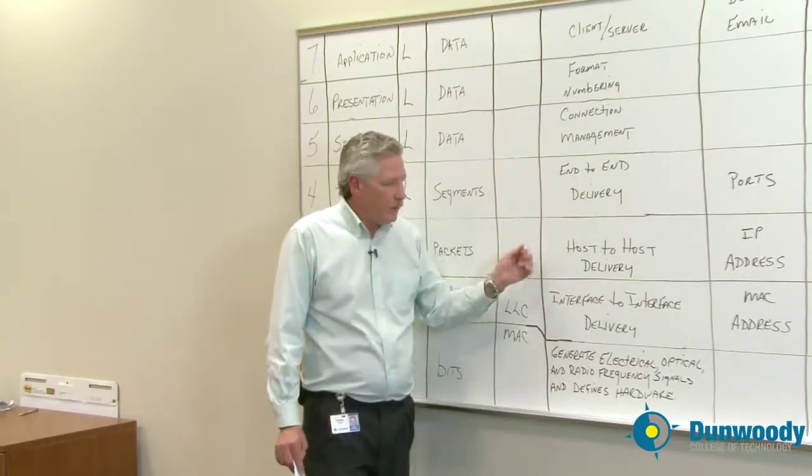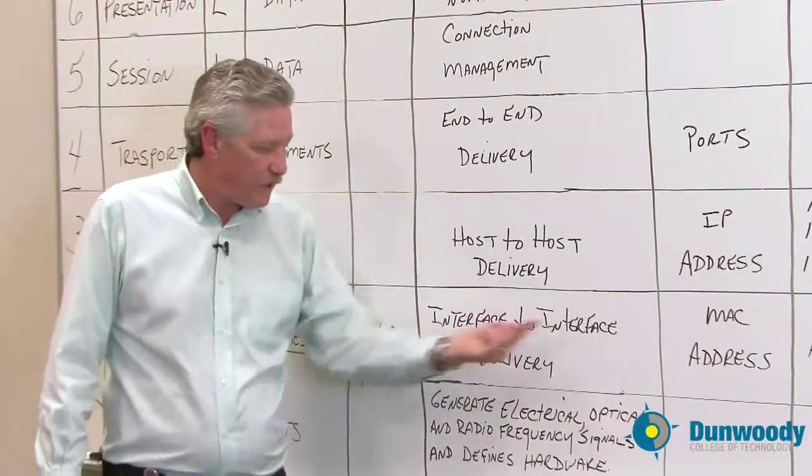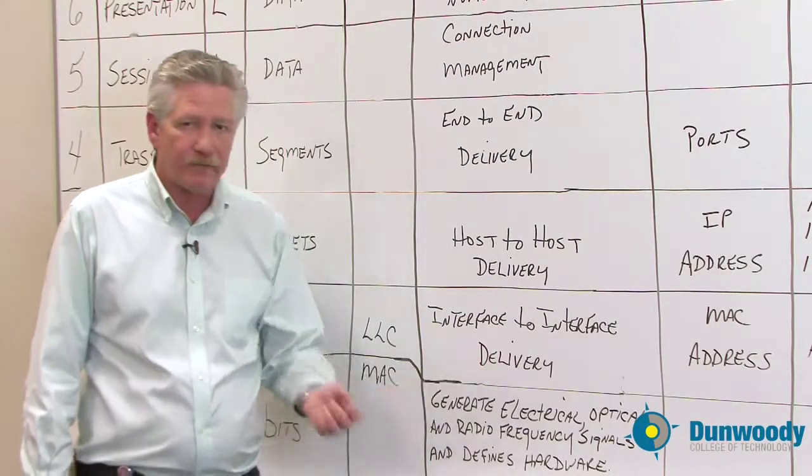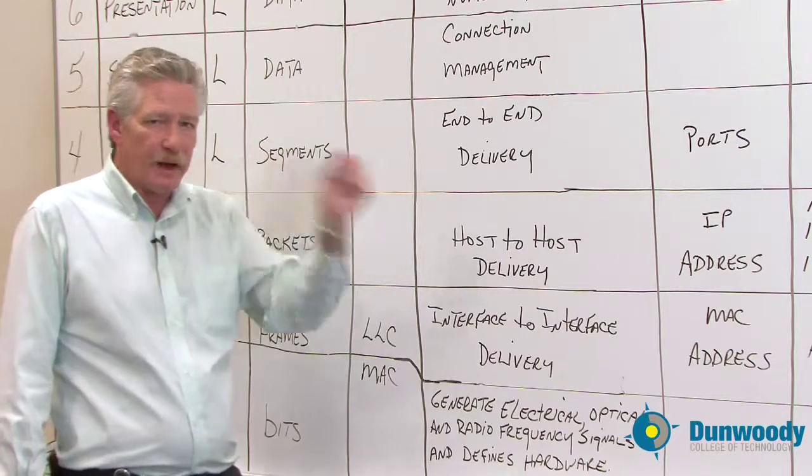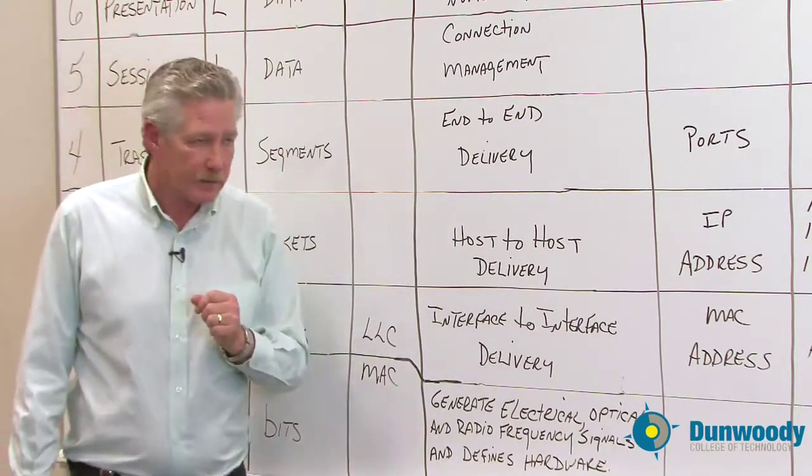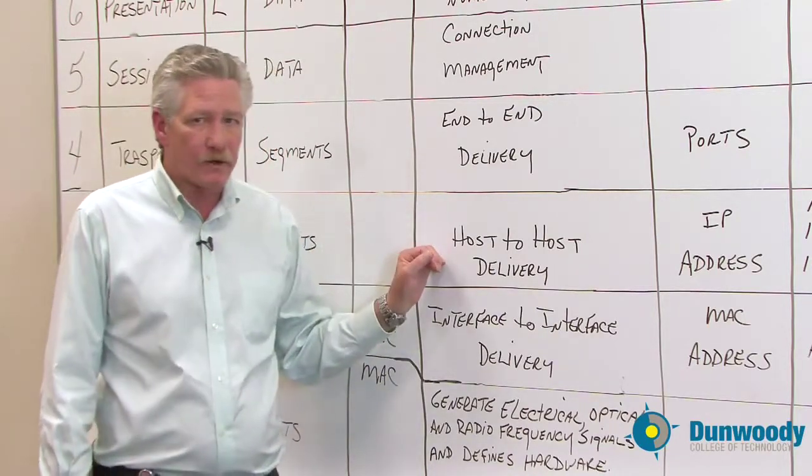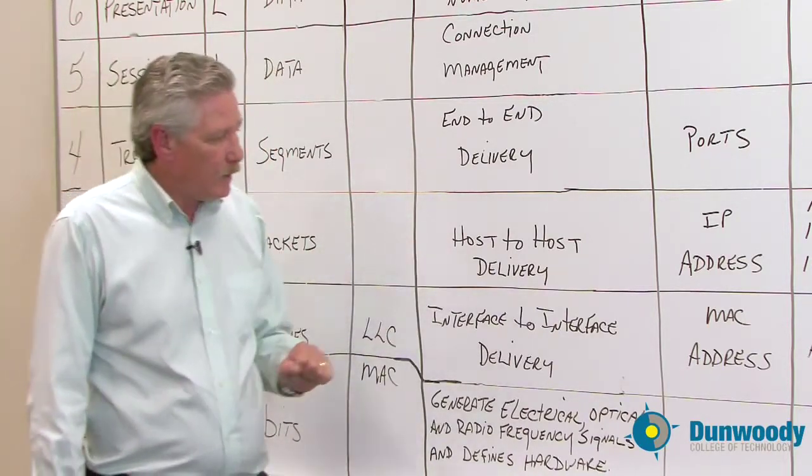At this layer, like before we were talking about interface to interface delivery, where we're talking about from the network interface card to the network interface card. Now we're talking about host-to-host delivery. Host-to-host delivery at layer three can be router to router, as an example.